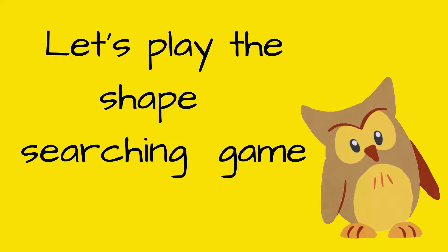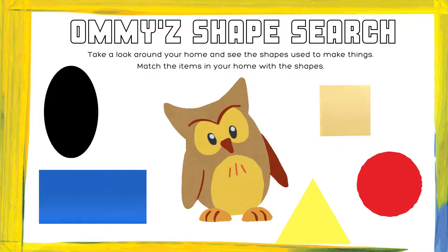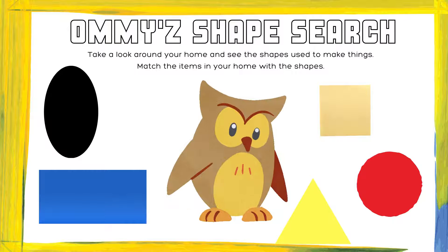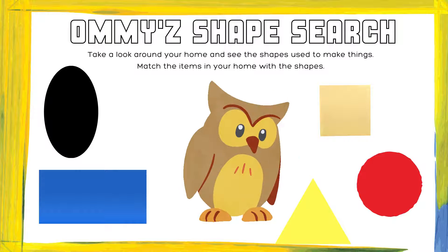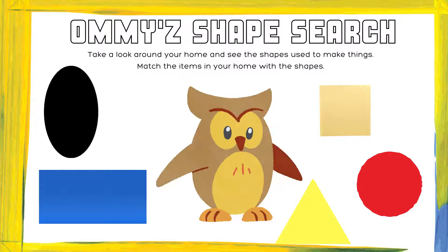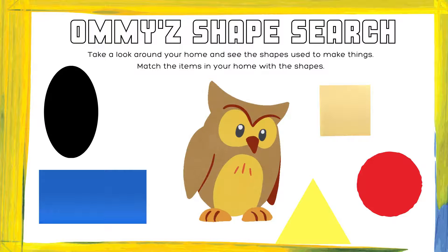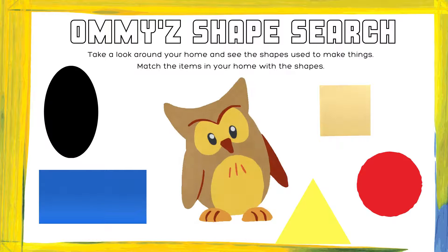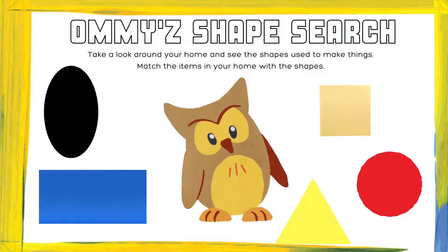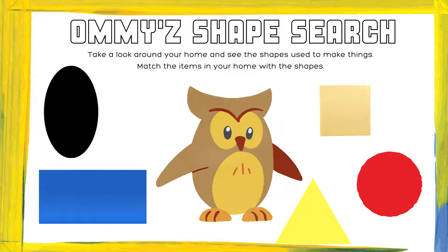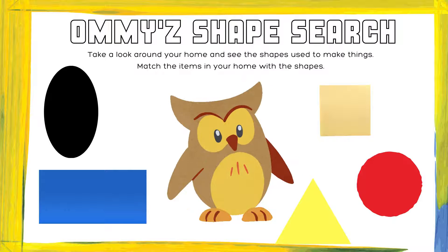So let's play the shape searching game, which means you've got to go around your house and see the shapes that you can find and match them to the shapes we talked about today. You're looking for things shaped like an oval, a rectangle, a square, a circle, and a triangle. I want to know about all of those things that you see in your house.